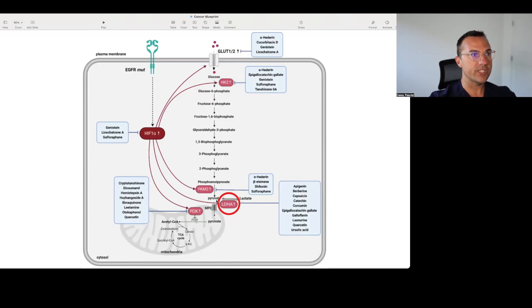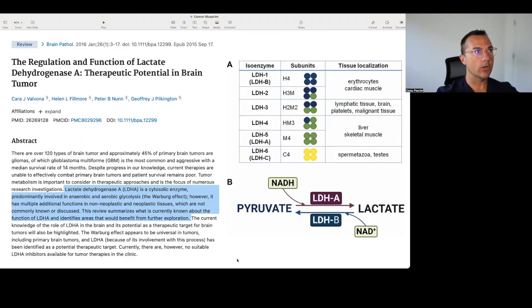Pyruvate, under normal physiologic conditions, is going to be put into the mitochondria and made into acetyl-CoA and then run through the TCA cycle and the electron transport chain with functioning mitochondria and without the PDK break in place. However, because we're talking about mitochondrial substrate-level phosphorylation, broken mitochondria, PDK break in place, we're going to be utilizing an enzyme called lactate dehydrogenase A, or LDH for short. And that is the potential therapeutic target in question here.